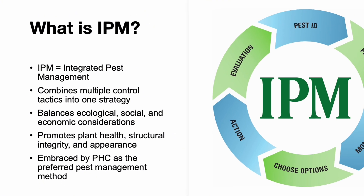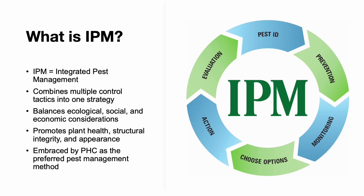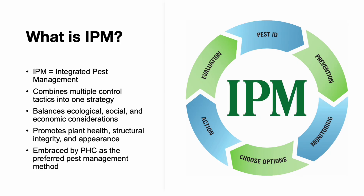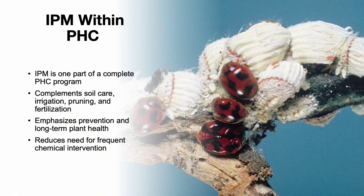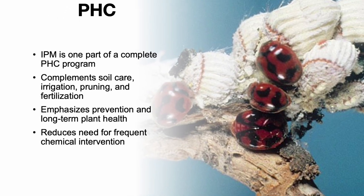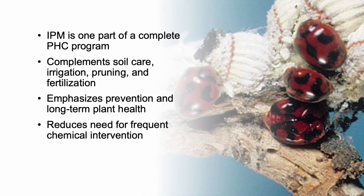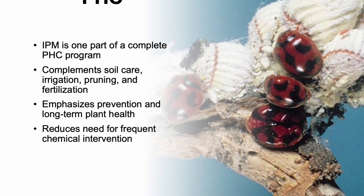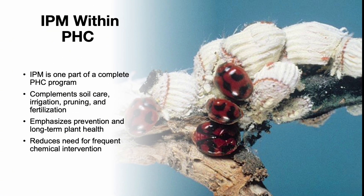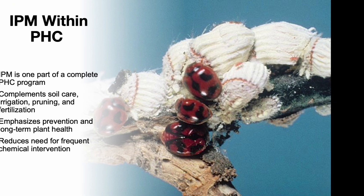The goal is to manage pests in a way that maintains healthy, structurally sound, and aesthetically pleasing landscapes without over-relying on chemicals. IPM isn't a standalone method — it fits within the larger framework of plant health care. PHC is a holistic approach to managing plant health through soil care, pruning, fertilization, irrigation, and pest management. IPM supports all of these by focusing on long-term solutions that prevent problems before they start.